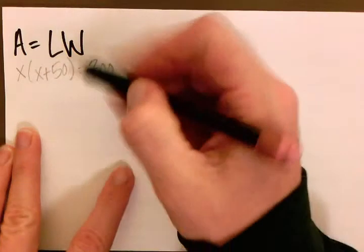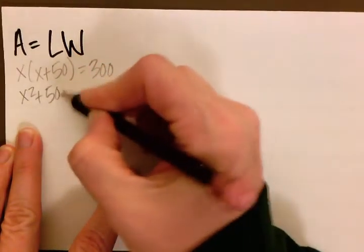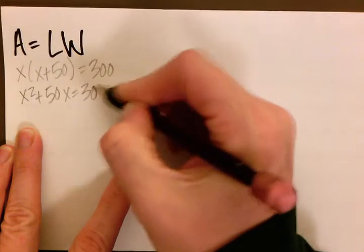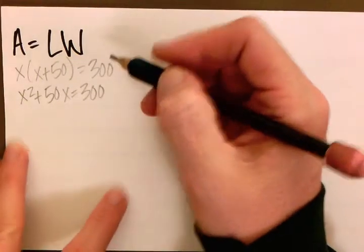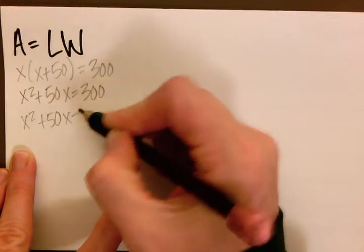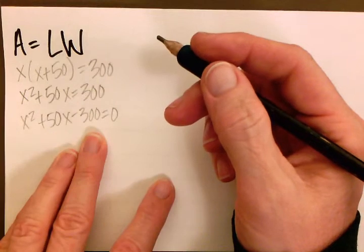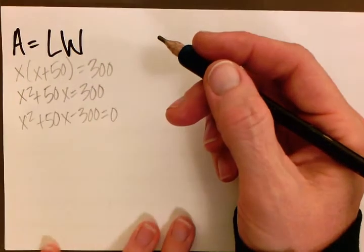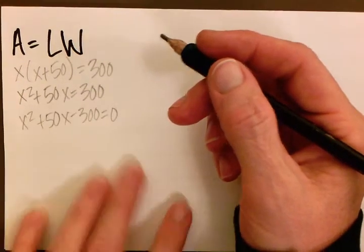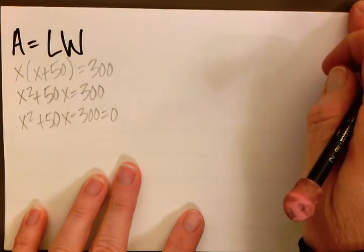Here we can distribute. So we have x squared plus 50x equals 300. And then we want to subtract 300 from both sides. x squared plus 50x minus 300 equals 0. We are going to use the quadratic equation here.